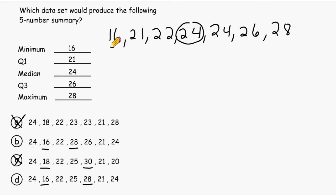Now let's take a look at everything to the left of 24 and figure out what is in the middle of those pieces of data, which is 21. This is going to be Q1. And that also matches up with the Q1 that we are looking for.